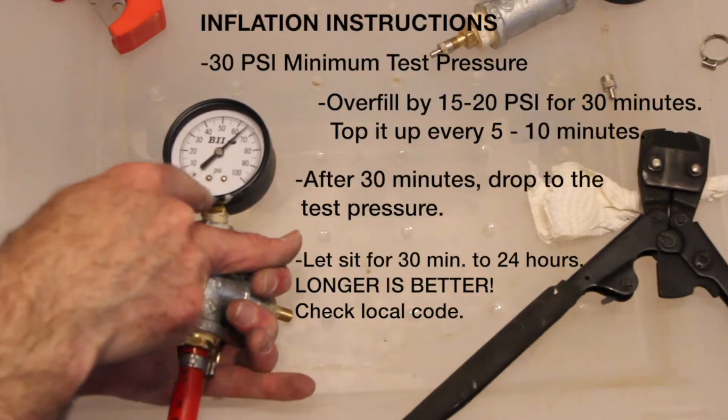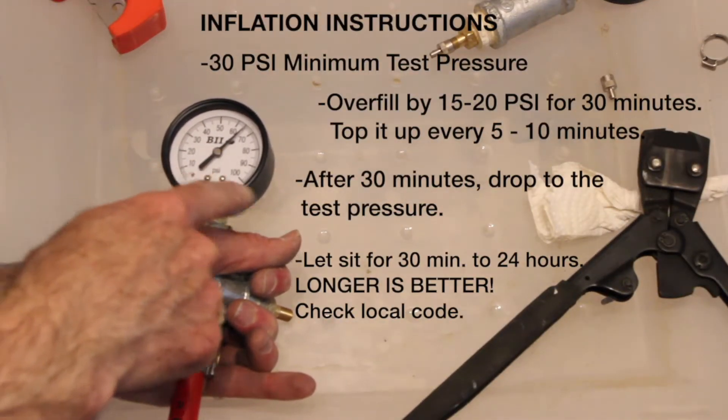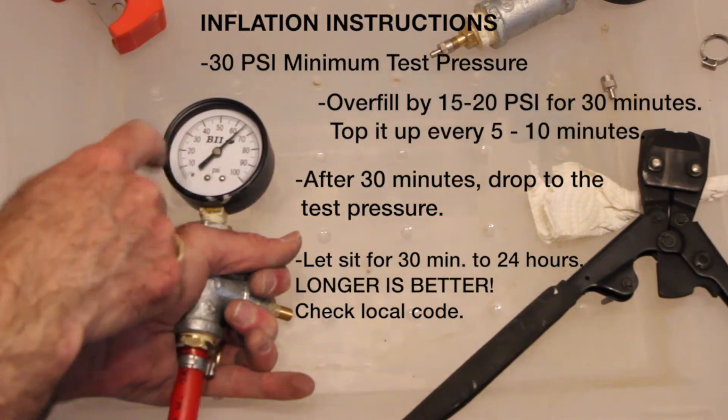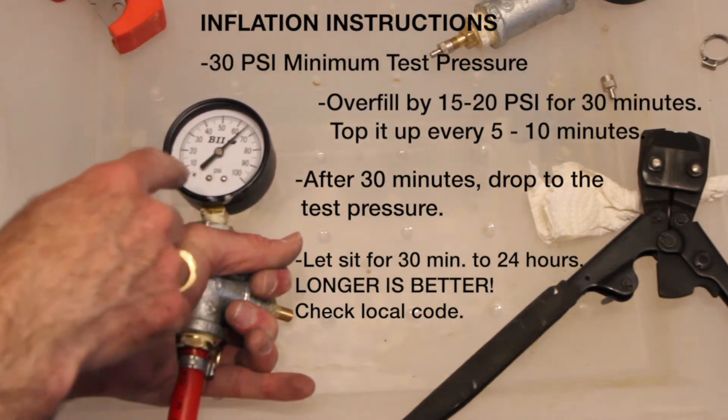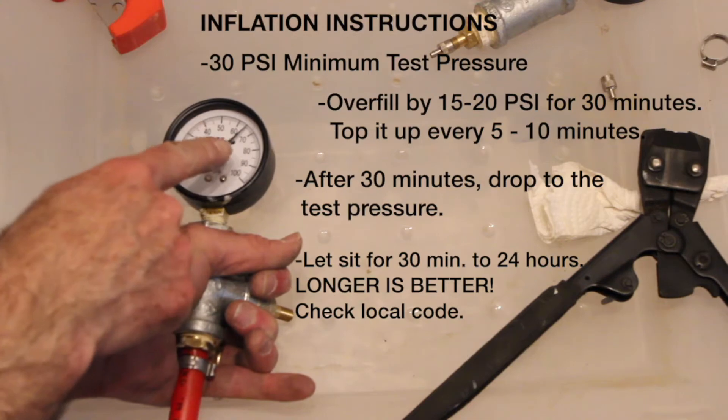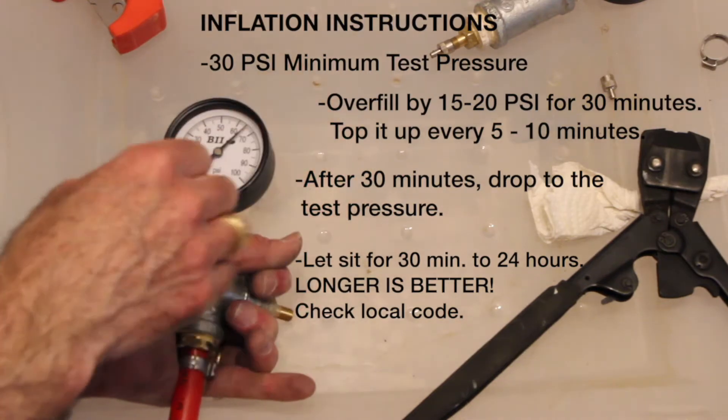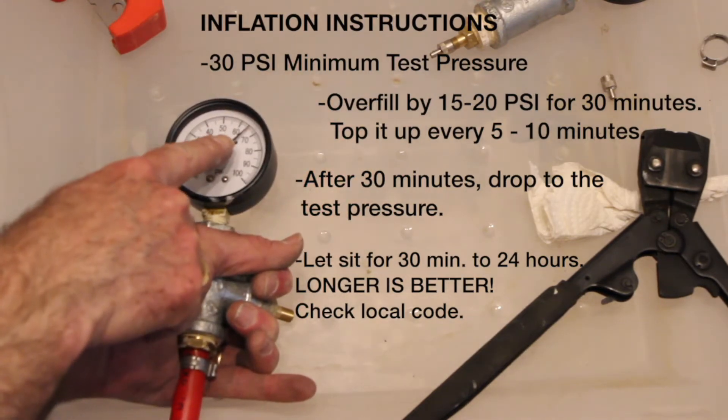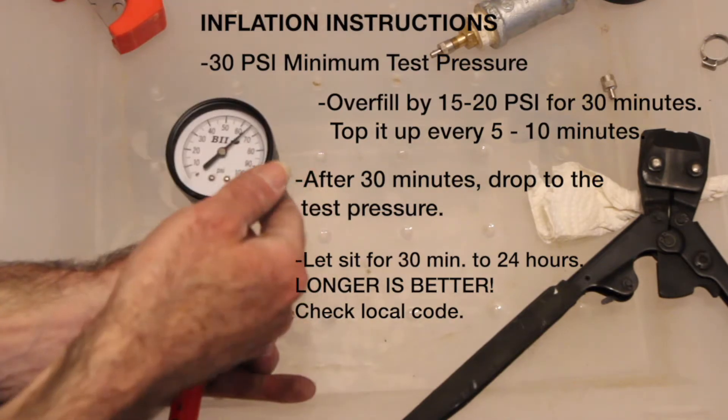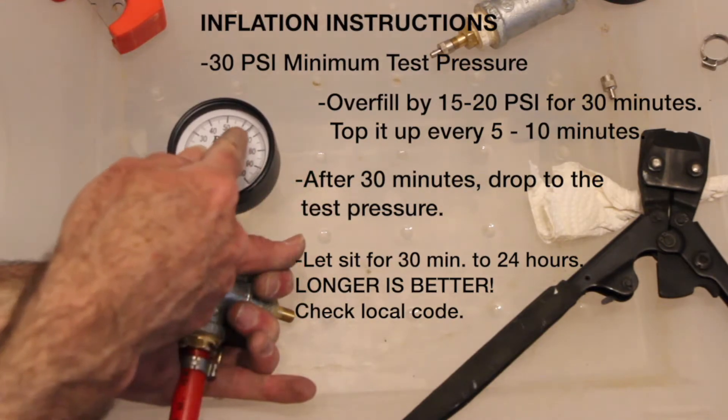You want a test pressure of a minimum of 30 PSI. In my case, I like to go a little higher, so I'm going to do it at 50 PSI for 30 minutes. First, I'll overfill by 15 or 20 PSI, so I filled it to 65. For 30 minutes, every 5 or 10 minutes I'll keep topping it up.